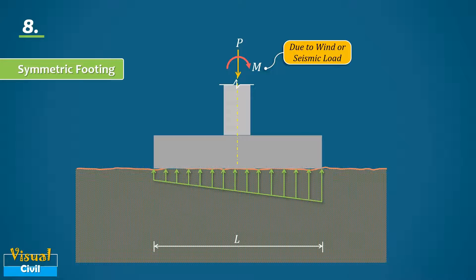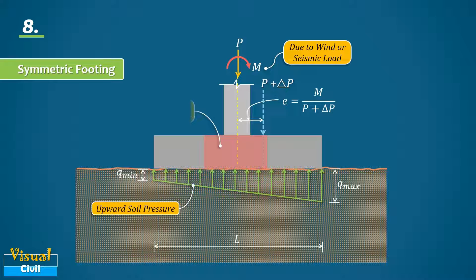At this time, the entire contact area of the footing will be subjected to a linearly varying upward soil pressure. Then it is better to proportion the footing dimension in such a way that the eccentricity will lie within the middle third of the footing. This way we can avoid the negative upward soil pressure.